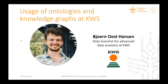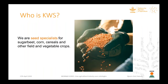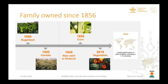Now Björn Ostensen will present on the usage of ontology and knowledge graphs at KWS. Thank you very much and thank you for having us. It has been a very interesting talk. Who is KWS? Unlike, for example, BASF or Bayer, KWS works basically only in seeds. Our main business is sugar beet, corn, cereals, and some other field and vegetable crops. It's a relatively old company — it started in 1856, more than 150 years ago, with sugar beet. Since then, different other crops have been added to the portfolio, with vegetables as the last one last year.